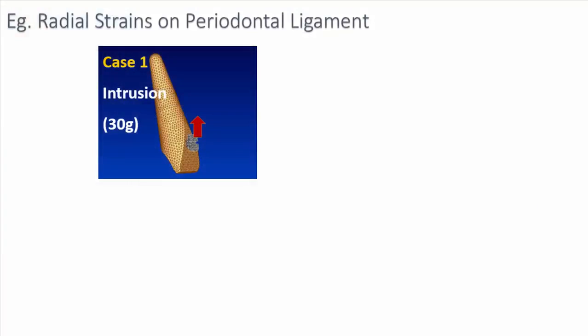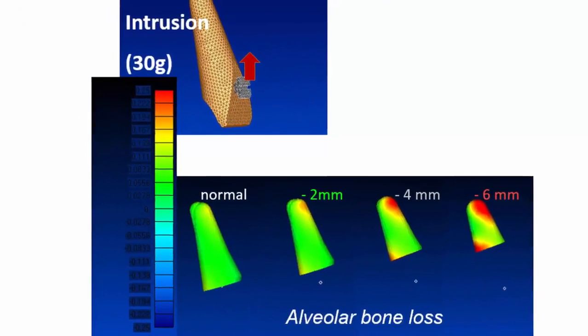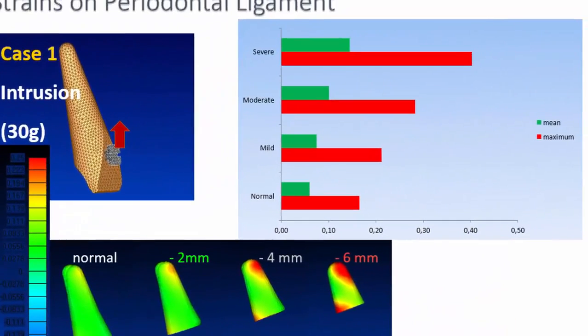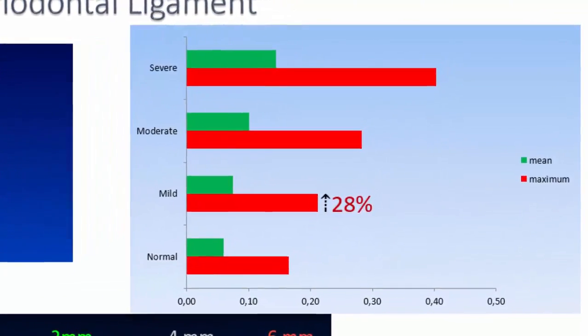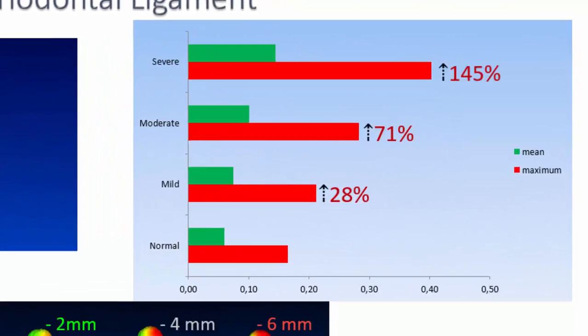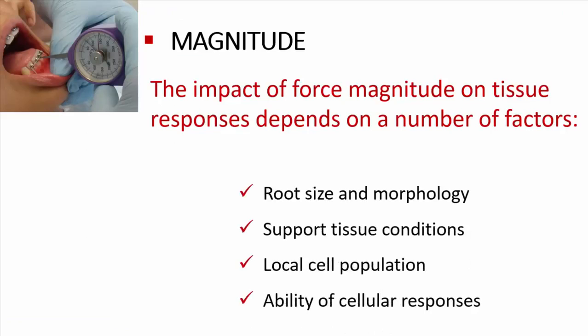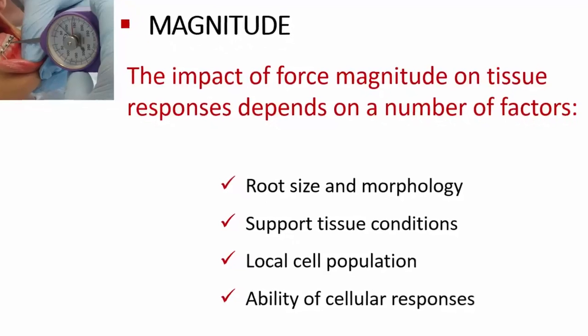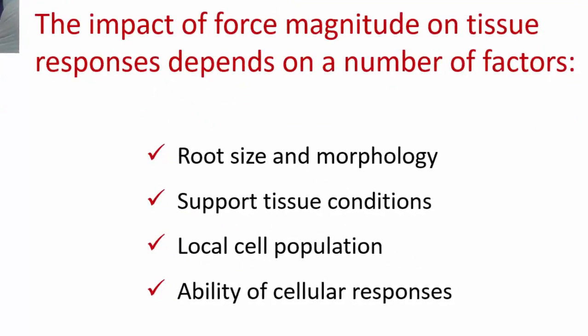Perceive this analysis on the tensile strains caused in the periodontal ligament, in which we simulate several degrees of loss of alveolar bone. Note that the application of the same force of 30 grams caused completely different strains according to the loss of bone support. The greater the loss of alveolar bone, the greater the strain caused in the periodontal ligament. This is why force magnitude is only a factor to be considered. And this factor is relative and must be individualized according to each particular case, respecting all those variables that directly influence the biological response obtained.